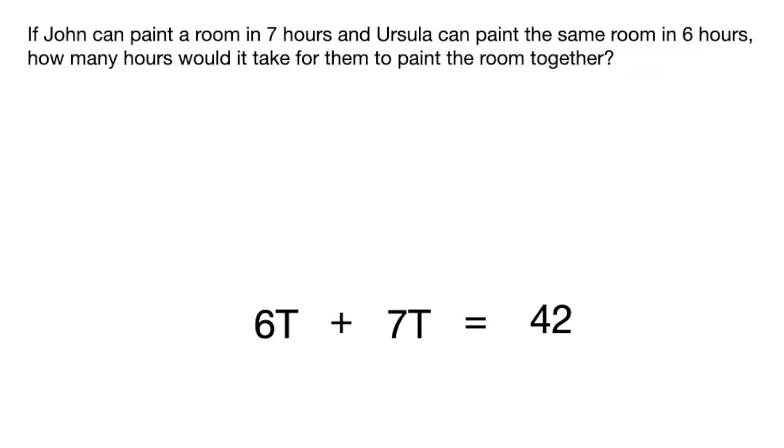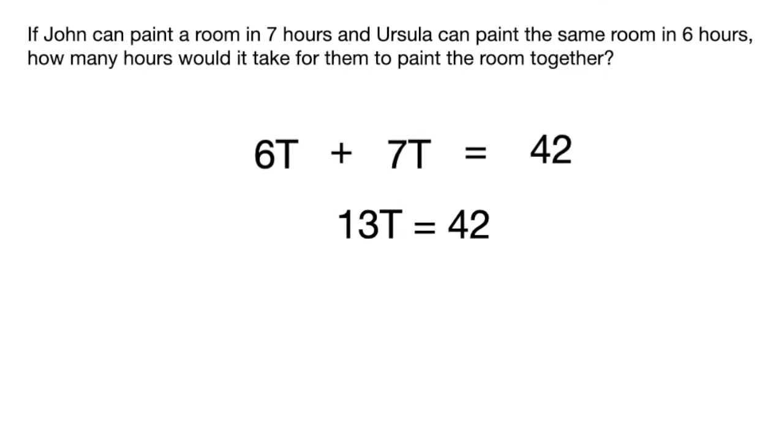Then just solve for t as you usually would by adding 6t plus 7t to get 13t equals 42, and divide 13 on each side to get 3.23 hours. And this is the time they spend painting the room together.